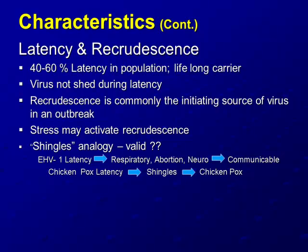I made this analogy which makes sense to me — some learned people didn't think it was valid — but I think there is a correlation between herpes in humans and herpes in horses, in that chickenpox latency results in shingles, and a person with shingles can actually give another person chickenpox. Similarly, with EHV-1 latency, that can be expressed and exposure of another horse can manifest in either respiratory, reproductive, or neurologic form, communicable to a wide range of susceptible hosts.